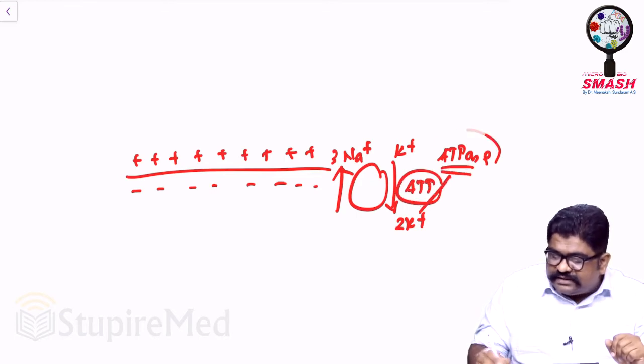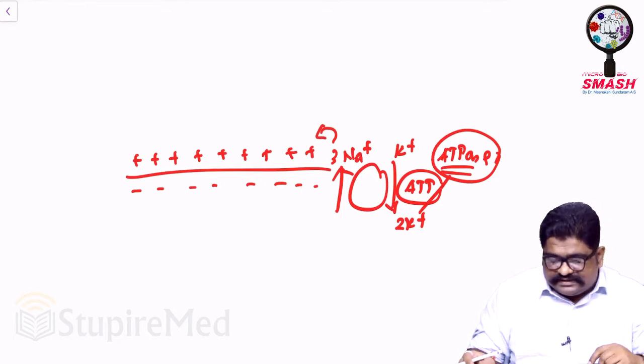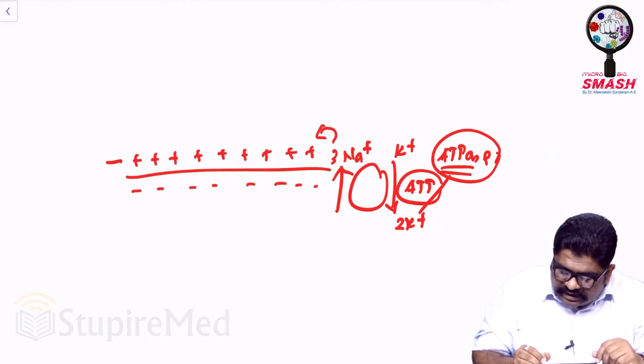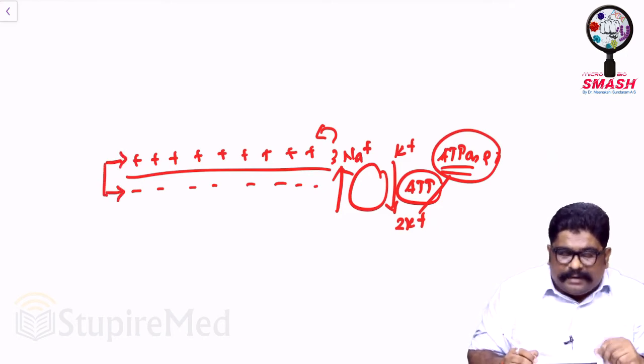ATP breakdown is done by the enzyme called ATPase. So always, plus charges will be more outside, minus charges will be more inside. Now this is called diametrically opposite charges: outside is plus, inside is minus.